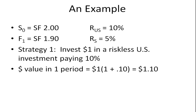So let's see how this works. Suppose we have a situation where the spot exchange rate between Swiss francs and US dollars is 2 Swiss francs equals 1 US dollar, and a forward exchange rate one period into the future of 1.9 Swiss francs to 1 US dollar. Let's also assume that the interest rate in the US is 10% and the interest rate in Switzerland is 5%.